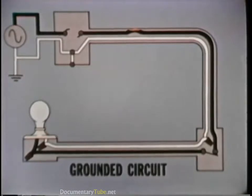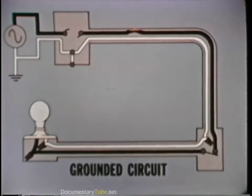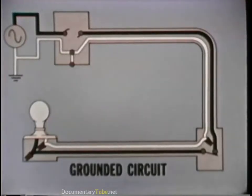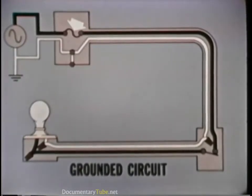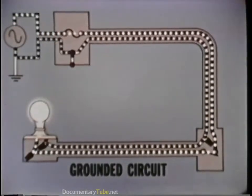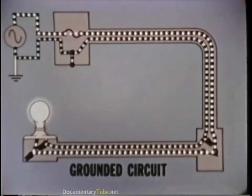To correct this condition, it is necessary to locate the undesired grounding of the hot conductor and remove it. Then, when the protective device is reset or replaced, the circuit is restored to service.